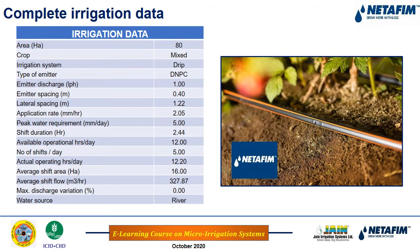At the end of the design, complete irrigation data must be given on the design drawing: crop, irrigation system type, emitter type (PC or non-PC), emitter flow rate, dripper spacing, lateral spacing, application rate, peak water requirement, shift duration, available operating hours per day, number of shifts per day, average shift areas, average shift flows, maximum discharge variation, and water source details.